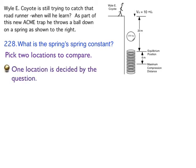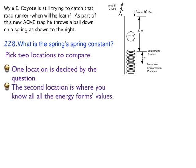So one of the locations is decided by the question. It's looking for the spring constant. In this case, that's going to imply to me that I've got to do the maximum compression distance because I have the least number of variables there. The second location is where you know all the energy's form values. In other words, velocity, height, and spring compression.